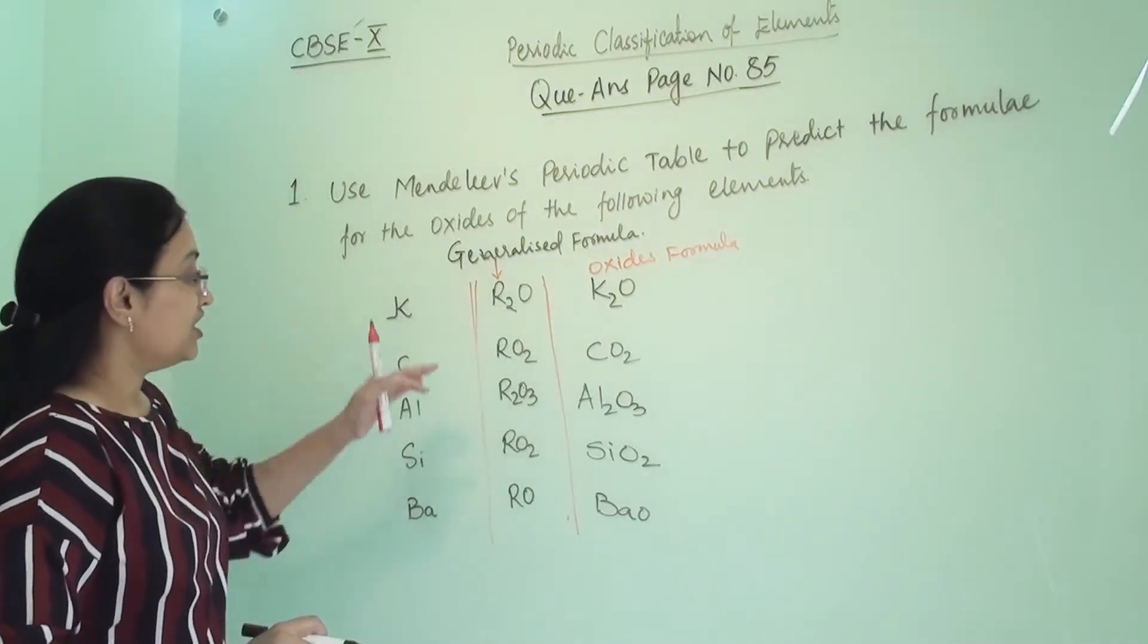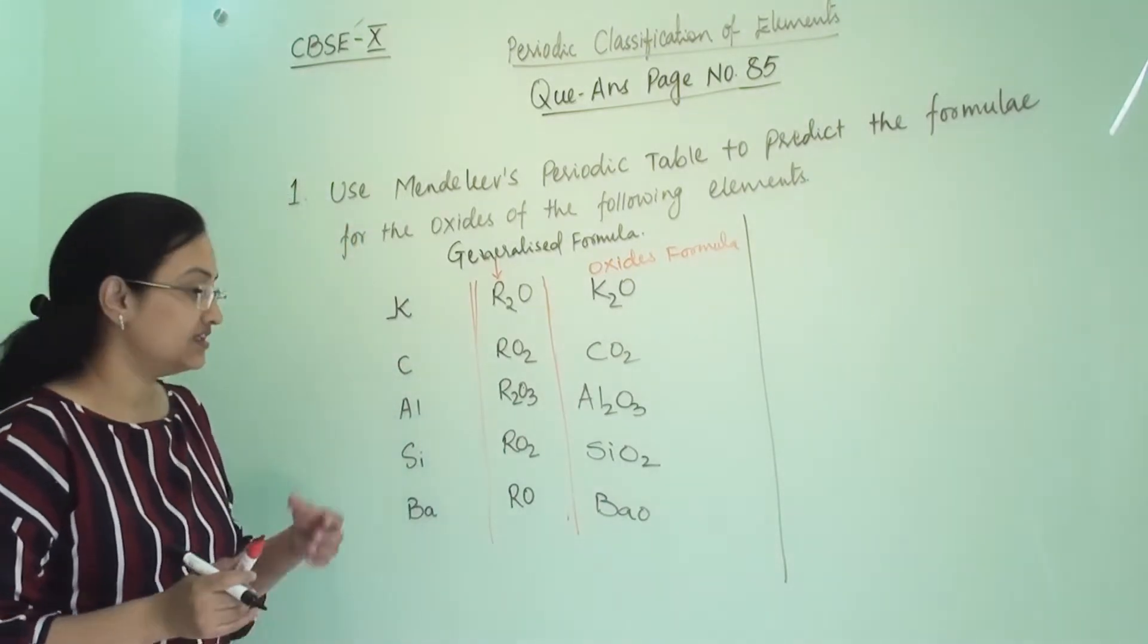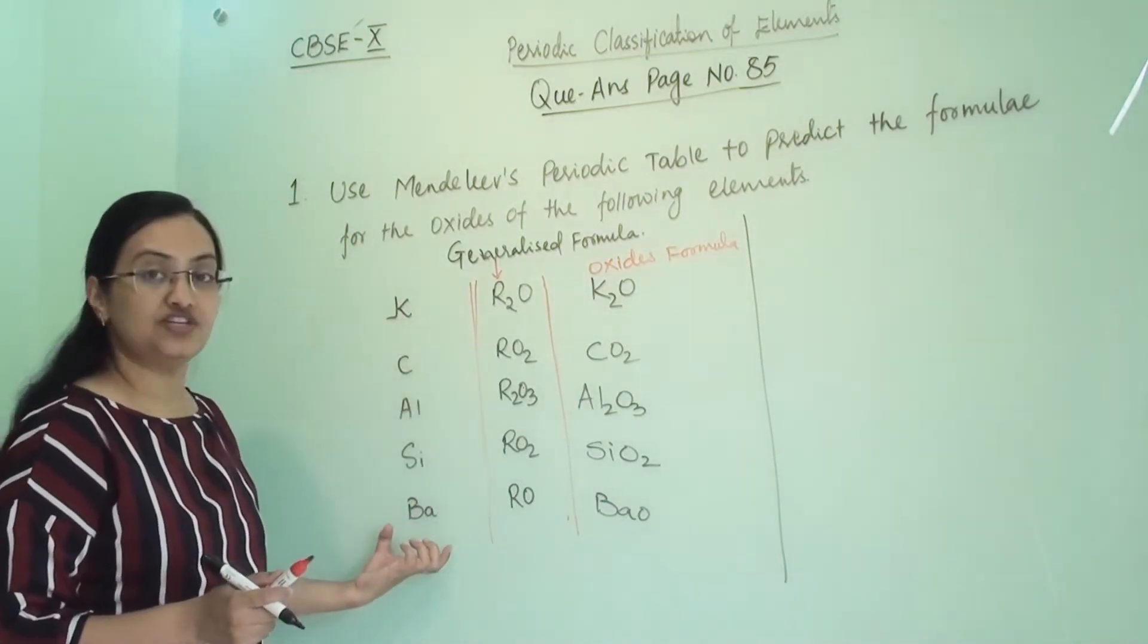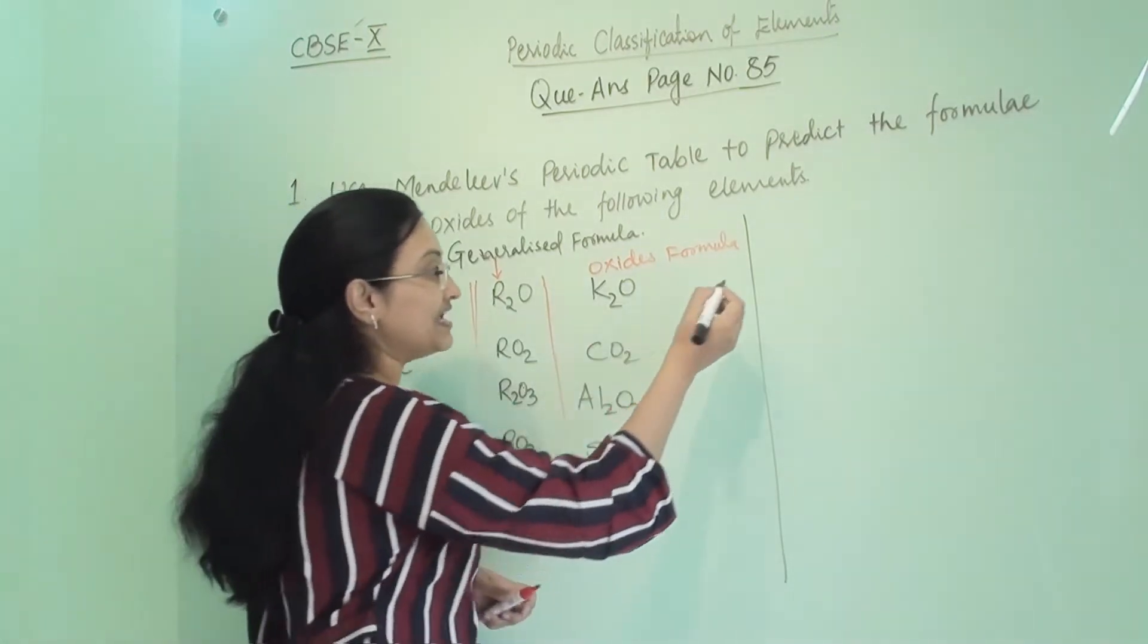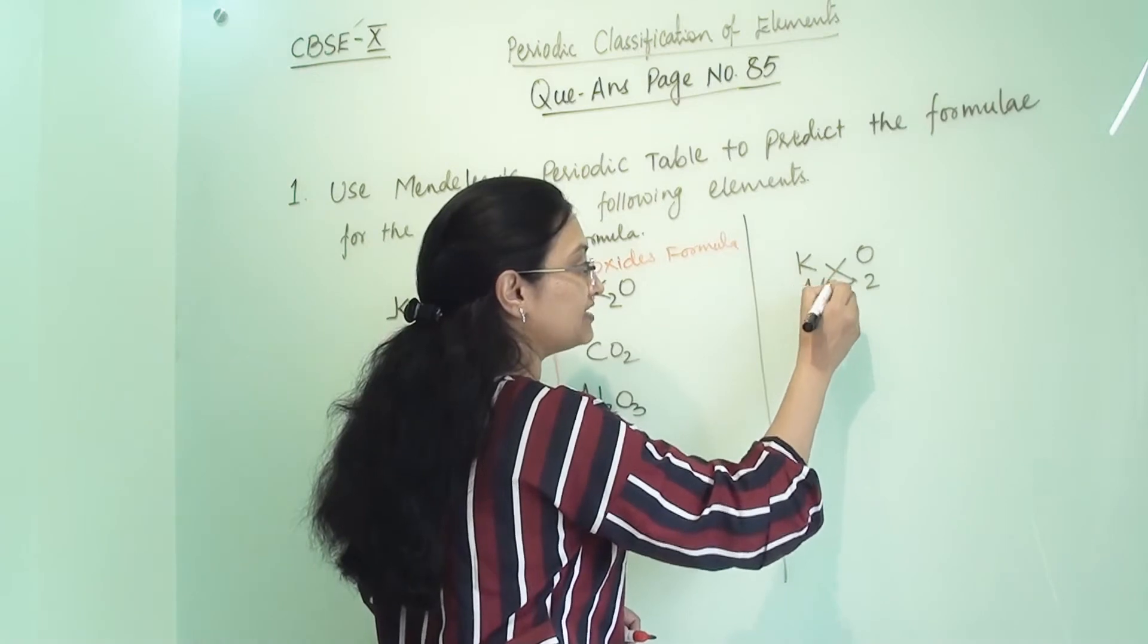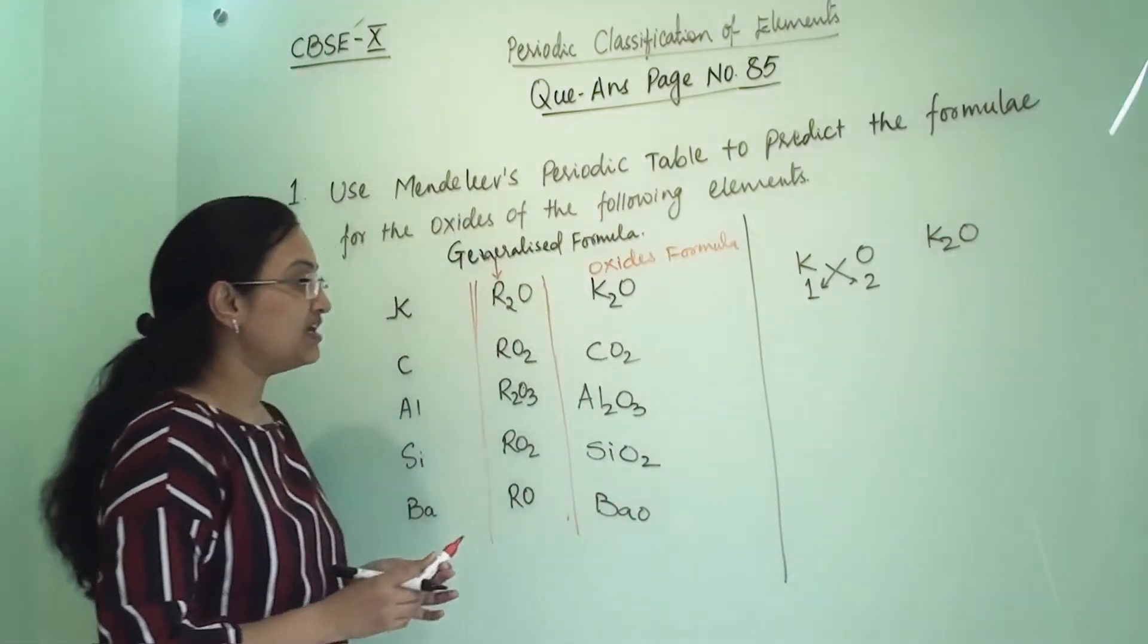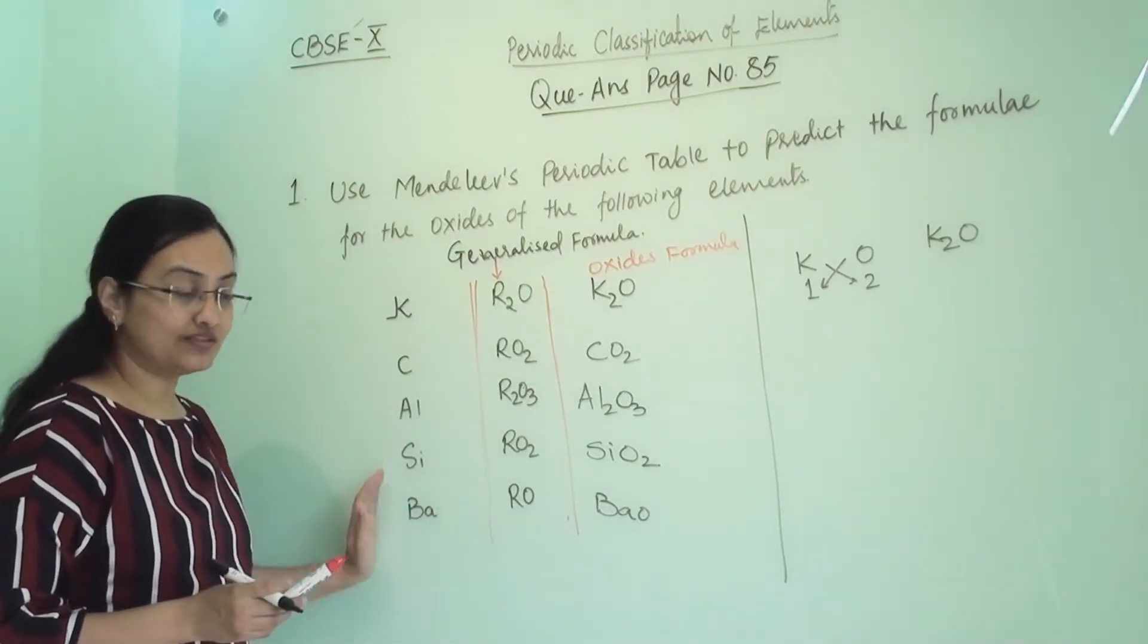Now if you do not know this generalized formula, then how to write it? It is easy when you know the valency of each element. Here potassium's combining capacity is 1, whereas oxygen's combining capacity is 2. So by criss-cross method we can write K2O. Similarly we can derive all the molecular formulas for all these oxides.